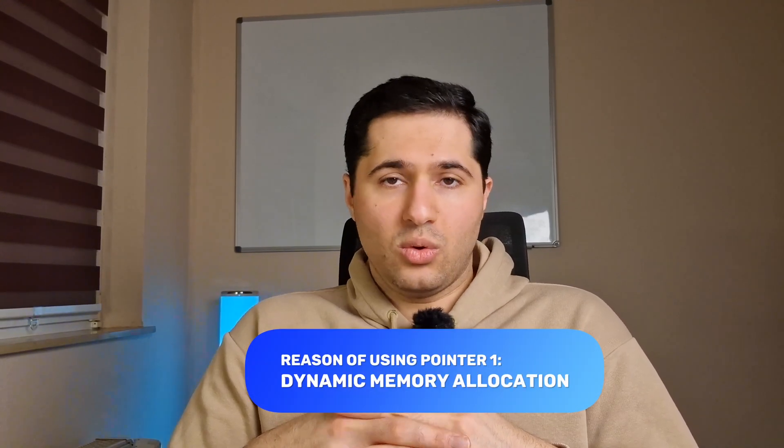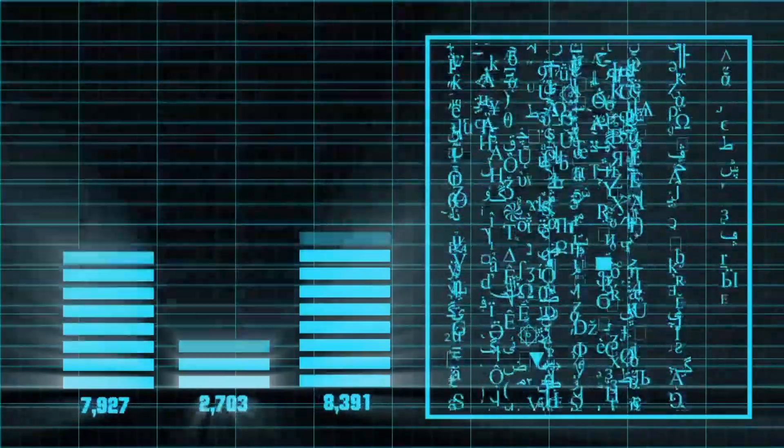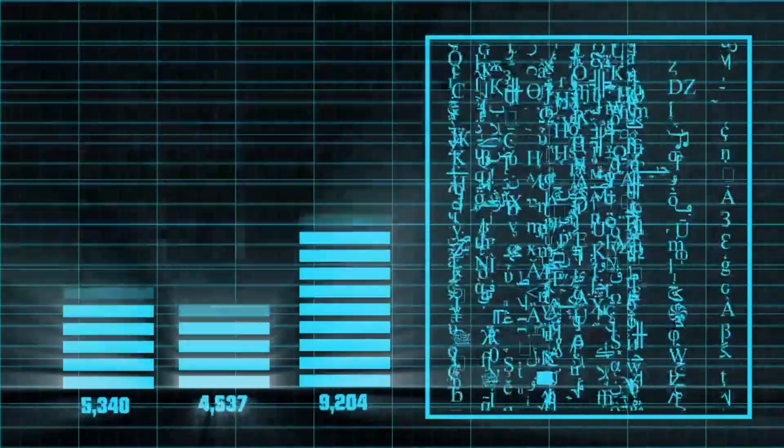But why use pointers instead of regular variables? Let's go over four key reasons. The first is dynamic memory allocation — allocating memory at runtime. In many cases we don't know in advance how much memory our program will use. Pointers allow us to create memory on the fly and adjust it during runtime. With normal variables we have to specify a fixed size at compile time, but with pointers we can request dynamic memory.